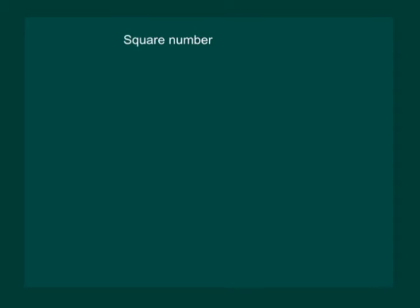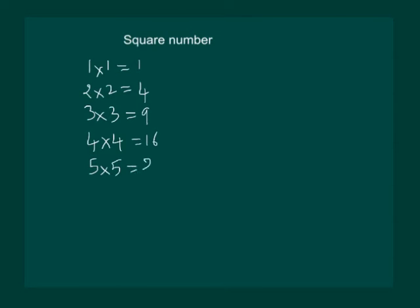We know that if we multiply 1 with 1, we get 1. 2 multiplied by 2 gives us 4. 3 multiplied by 3 gives us 9. 4 multiplied by 4 gives us 16. 5 multiplied by 5 gives us 25. And so on.